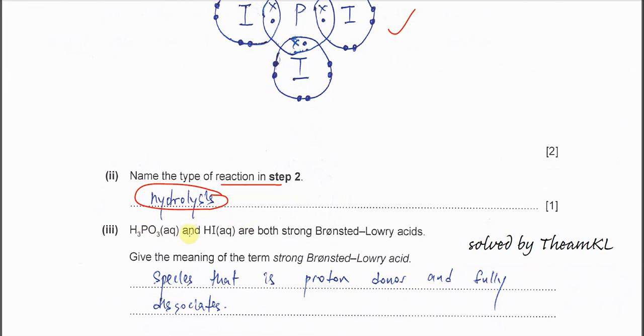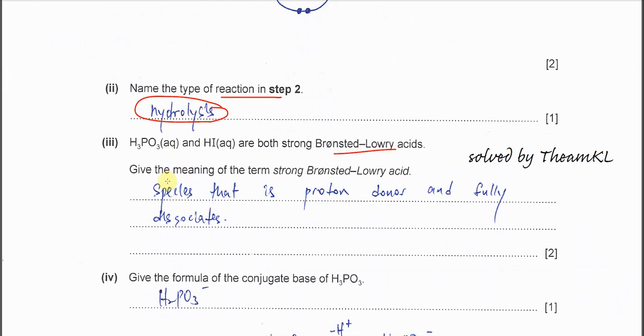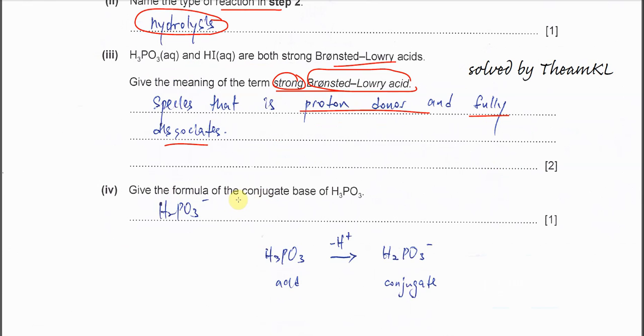H3PO3 and HI are both strong Brønsted-Lowry acids. Give the meaning of strong Brønsted-Lowry acid. You have to relate to two things. One is Brønsted-Lowry acid and another is strong. Brønsted-Lowry acid is always proton donor, and strong acid means fully ionized. You just need to mention these two terms.